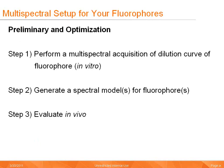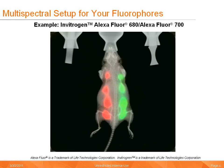There are three recommended steps for performing preliminary optimization for a multispectral setup. Step one: perform a multispectral acquisition of a dilution curve of fluorophore in vitro. Step two: generate spectral models for the fluorophores. Step three: evaluate the model in vivo. The setup and optimization may be adjusted according to end user needs. The primary benefit of this preliminary setup is that conditions can be optimized with concentrated positive controls. We will follow in detail the process for multispectral acquisitions of Alexa Fluor 680 and Alexa Fluor 700 in a multiplex application.